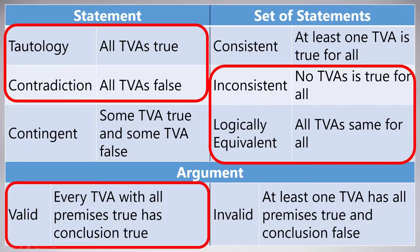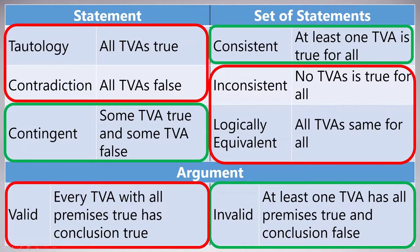The same goes for contradiction, inconsistent, logical equivalence, and valid. For valid, we need to know that every single TVA is safe — safe in the sense that we don't get true premises and a false conclusion. The ones marked in red seem to need a full truth table. But if you look at the rest — the ones marked in green — consistent, contingent, and invalid, these actually only require us to know one or two rows of a full truth table. We can just have a single TVA, and that would allow us to know the semantic property.